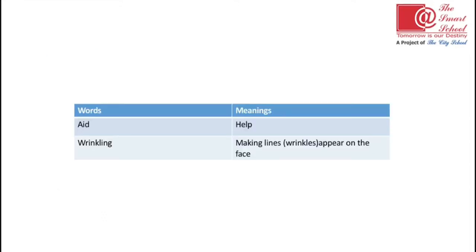You must use sharp tip pencils and always mention the date whenever you do your work. Now let's do the words meaning. As you have only two word meanings given in your book, you are going to copy them down. The first word is 'aid' — aid means to help someone. The second word is 'wrinkling' — wrinkling means making lines or wrinkles that appear on the face when someone gets old.